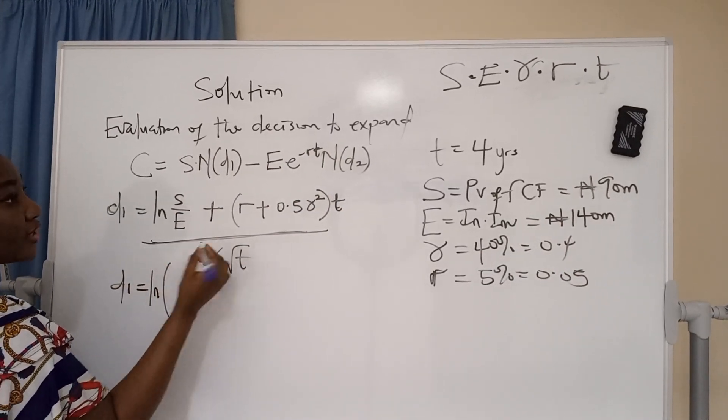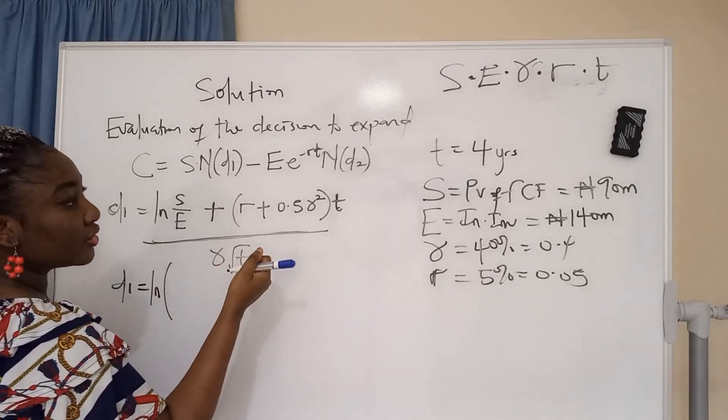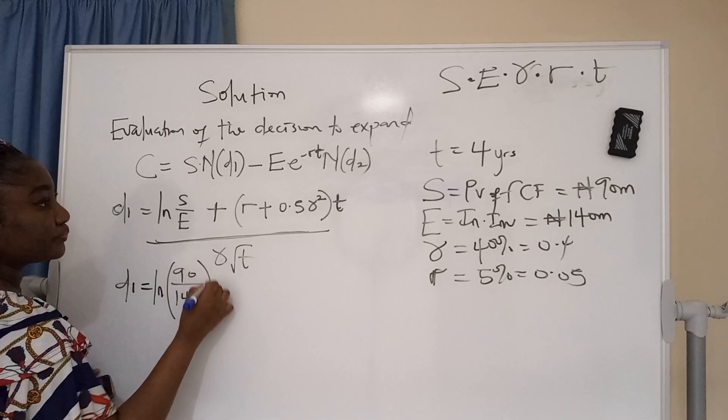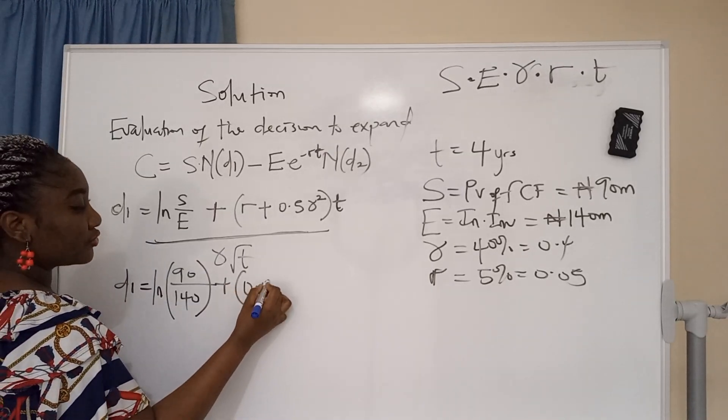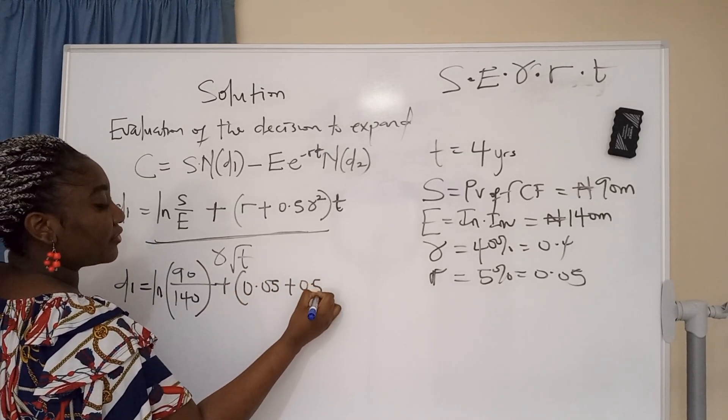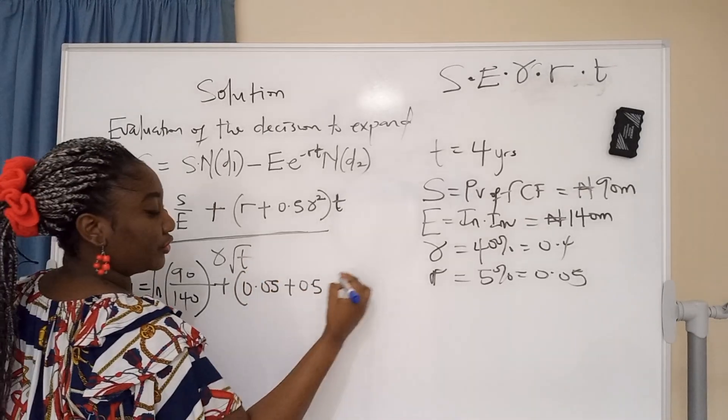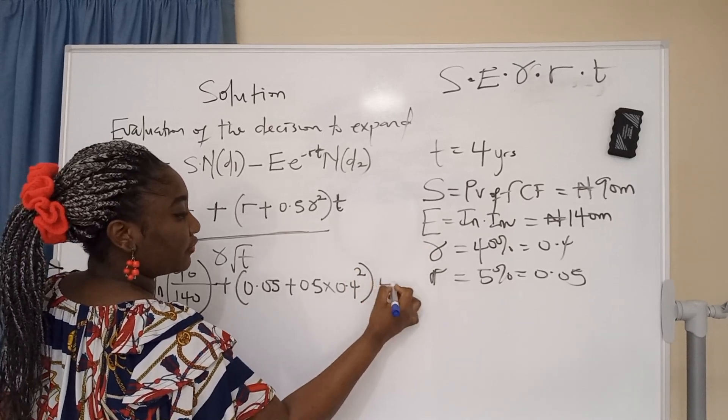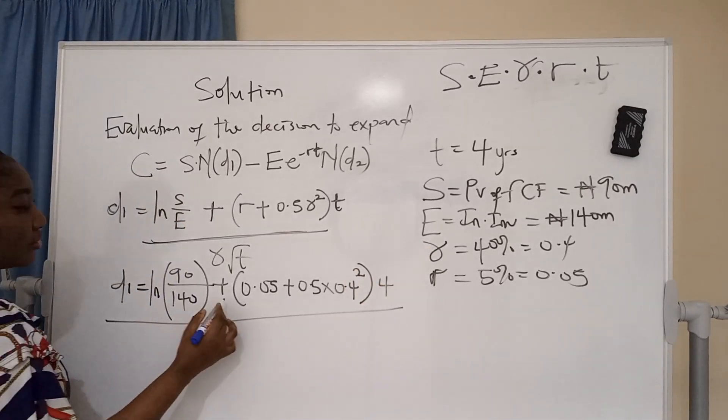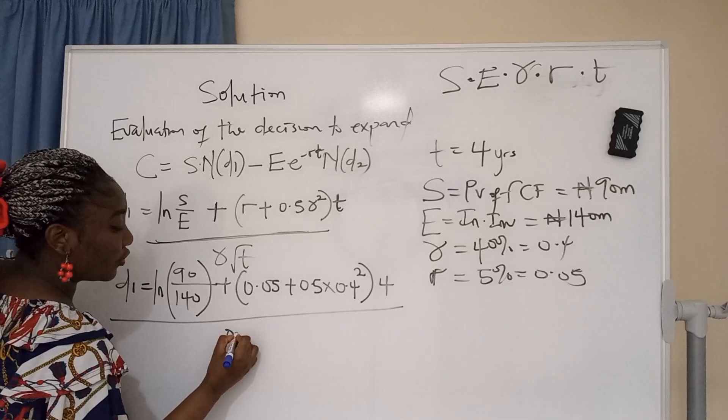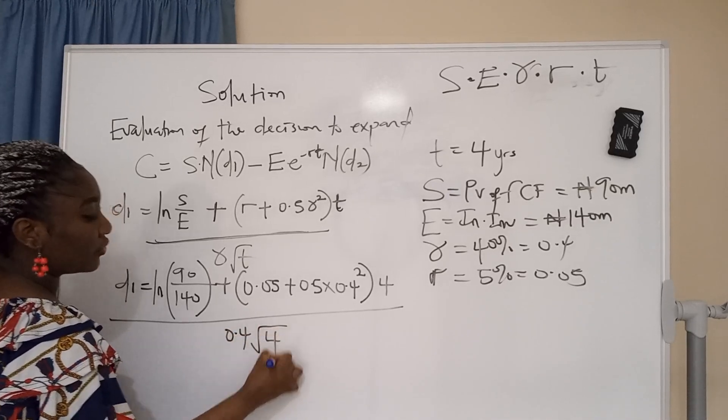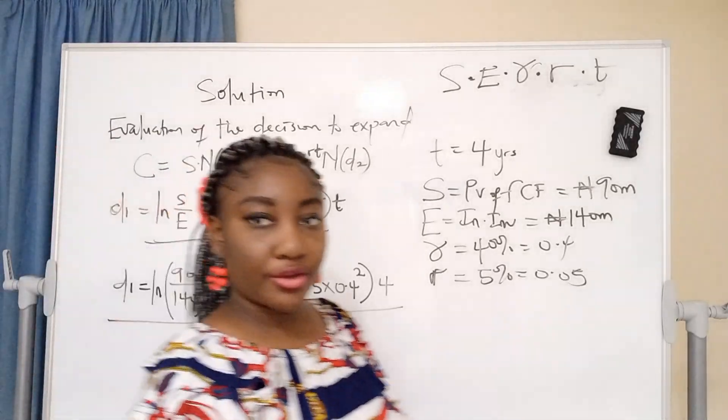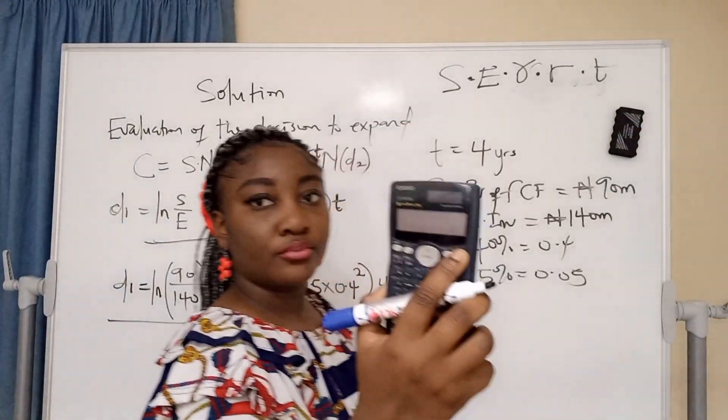Natural log S - 90 over 140 - plus R, 0.05, plus 0.5 standard deviation squared, 0.4 squared, times T, 4 years, all over standard deviation 0.4 root T, root 4. You don't have to rush this input of formula. Just make sure it's correct. Take your calculator.